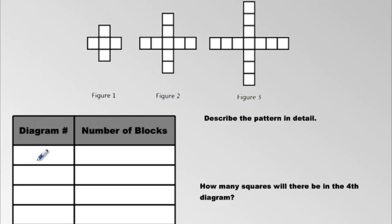First thing I'm going to do is I'm going to label the diagram numbers in this chart and you do the same, just write 1, 2, 3. We got three diagrams and then count the number of blocks. We're going to count 5 here and this looks like 9, and here we got 13.